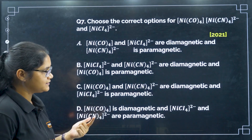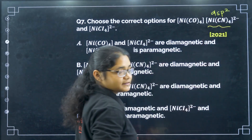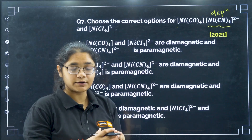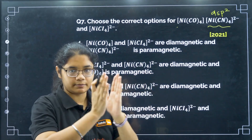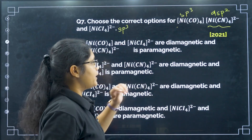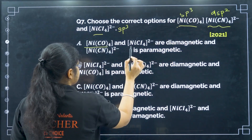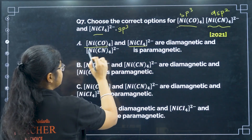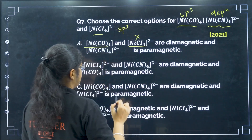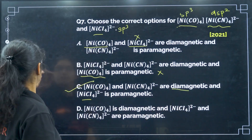Next, choose the correct options for Ni(CO)4, Ni(CN)4 2−, and NiCl4 2−. CN− is a strong field ligand, so Ni(CN)4 2− has DSP2 hybridization and is square planar. For Ni(CO)4, CO is a strong field ligand but the oxidation state of nickel is 0, so all D orbitals are occupied — the hybridization is SP3 and it is tetrahedral. NiCl4 2− is also SP3 and tetrahedral. Therefore, Ni(CO)4 and Ni(CN)4 2− are diamagnetic while NiCl4 2− is paramagnetic. That is option C.